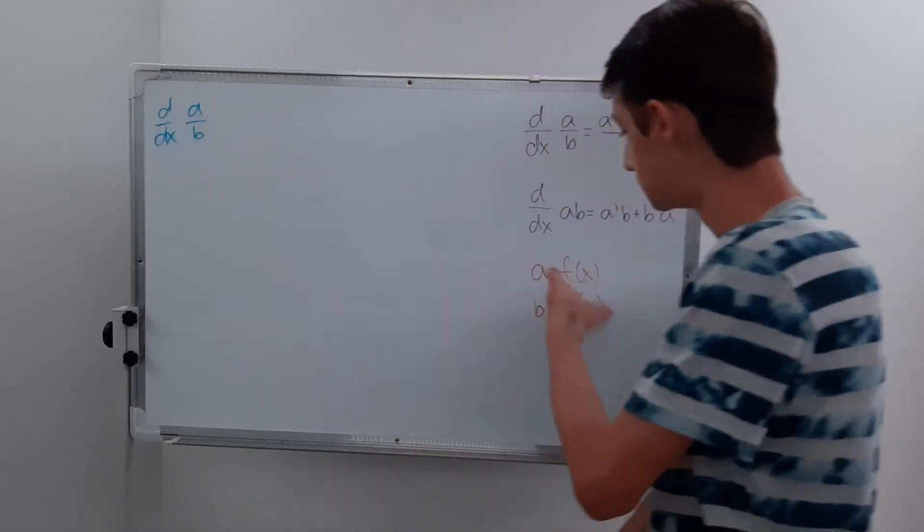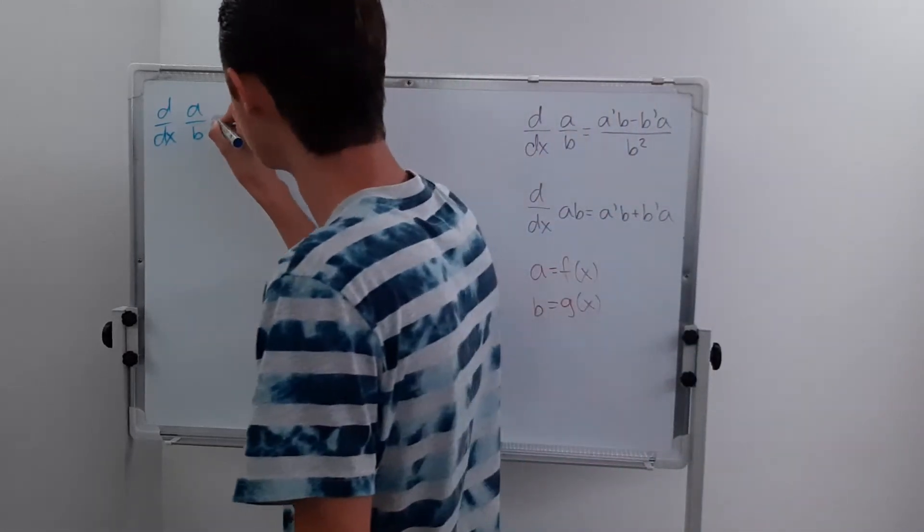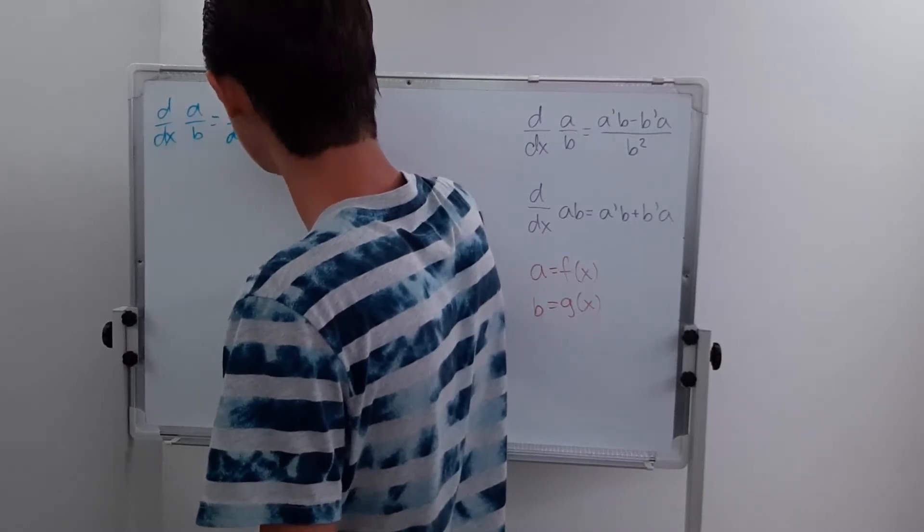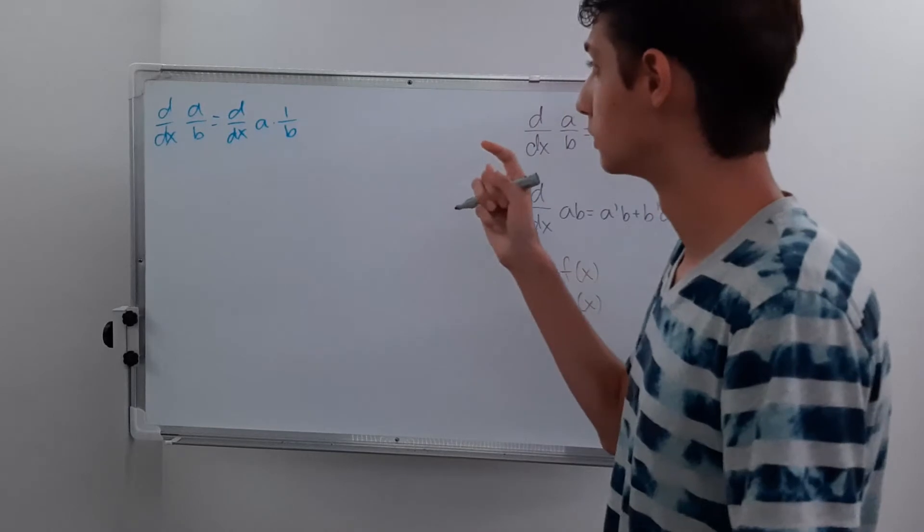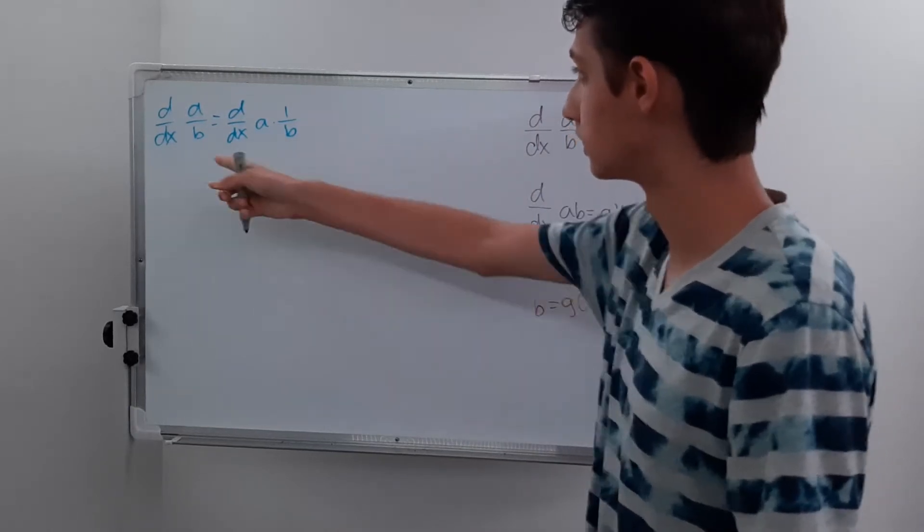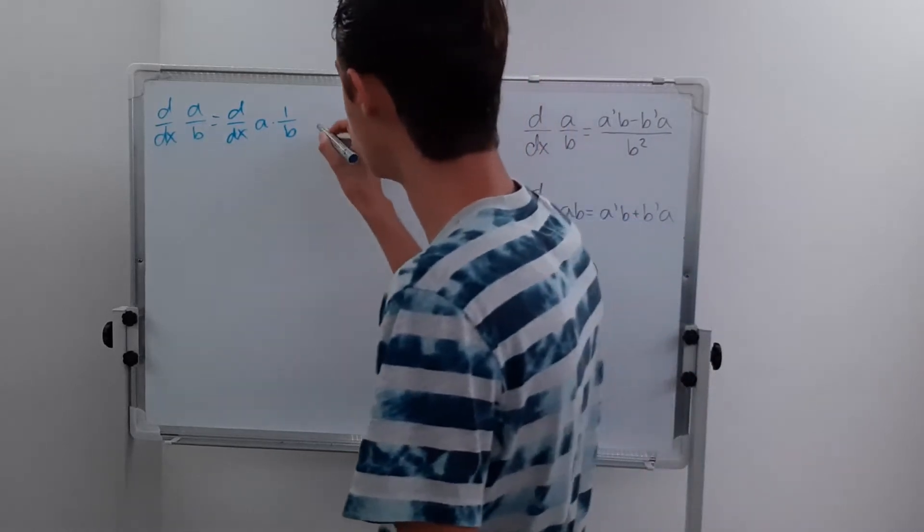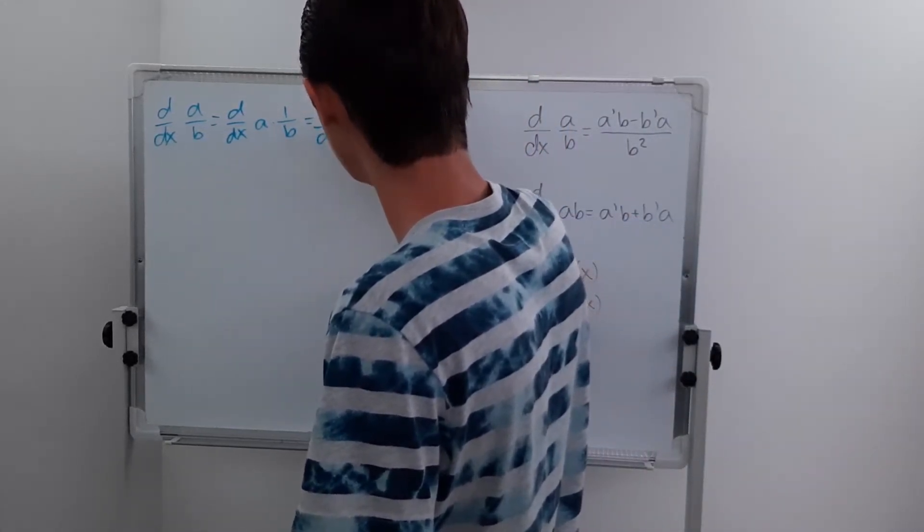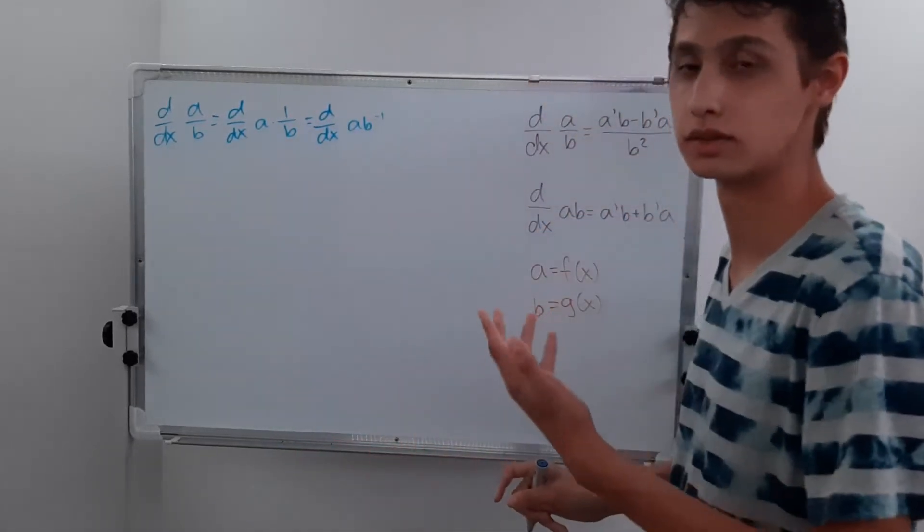So we can actually convert this to say d/dx of a times 1 over b, right? So 1 over b is the same as dividing by b. And then we can convert this further to say a times b to the negative 1. This makes it a lot easier for us to use the product rule.